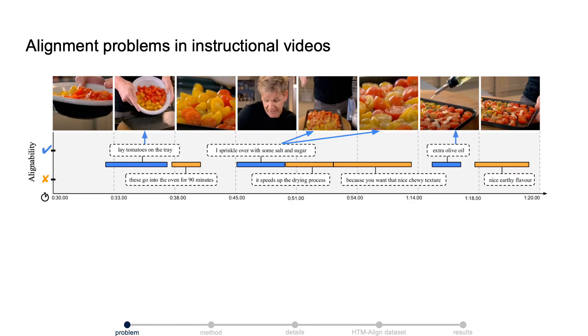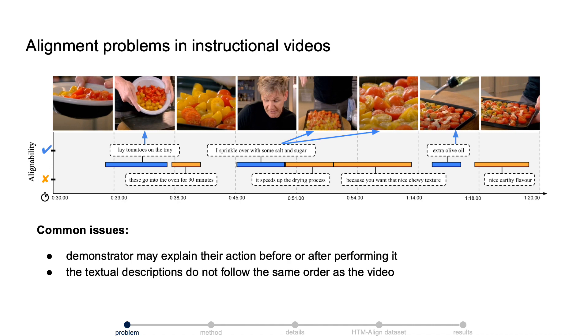There are some common alignment problems in this example. First, the video and the text descriptions are usually not semantically synchronized. In other words, they are misaligned.